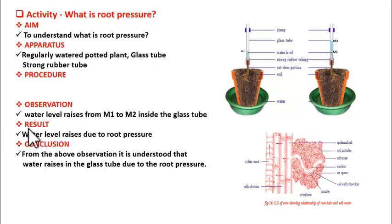So what is our result here? Water level rises due to root pressure. And what is our conclusion? From the above observation, it is understood that water level rises in the glass tube due to the root pressure.